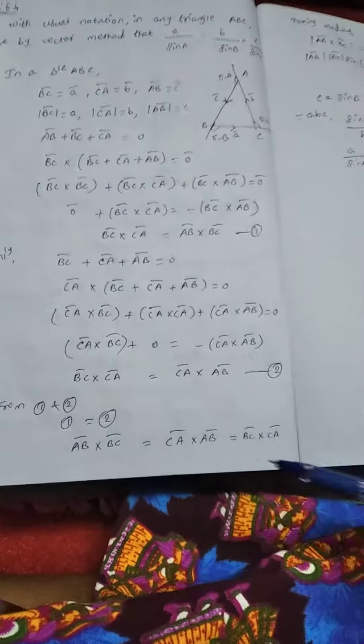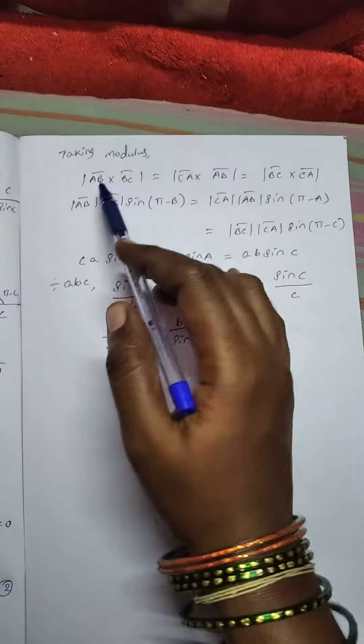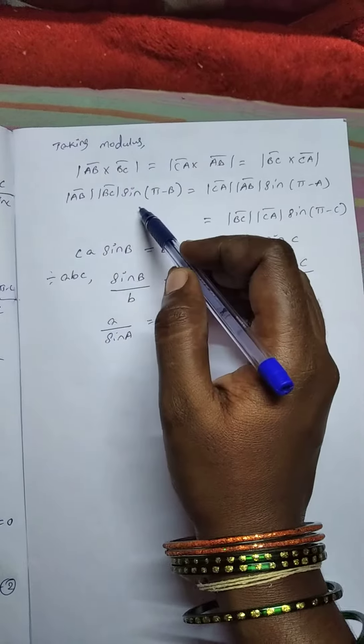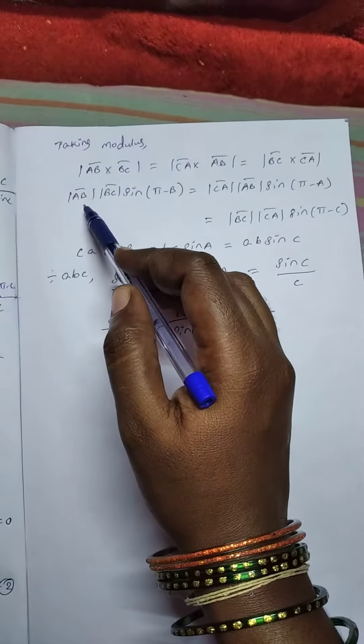Taking modulus now. Cross product formula: modulus of BC cross modulus of CA cross sin of the angle.